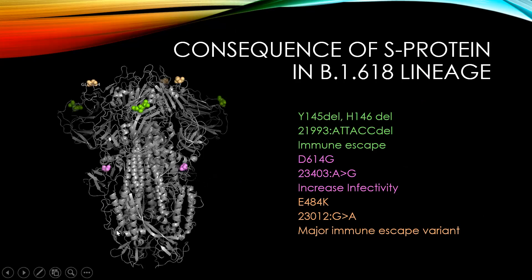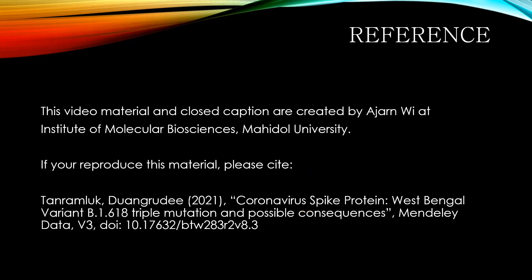The consequence of the spike protein in the B.1.618 lineage comprises the deletion and E484K, which are found to have immune evasion properties, and D614G, which increases infectivity.